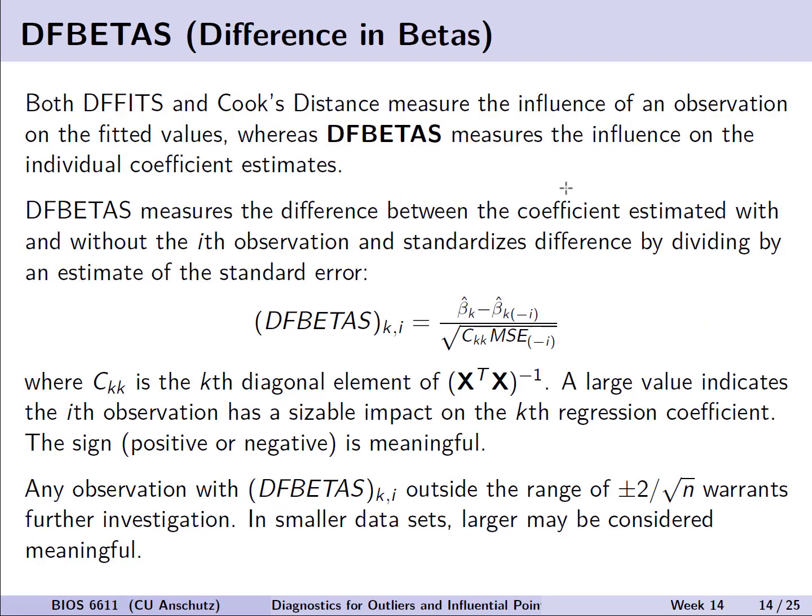The final term we'll look at to also numerically explore potential influence is DFBETAS or difference in betas. Both DFFITS and Cook's distance were measuring the influence of an observation on fitted values in some way, whereas the DFBETAS will measure the influence of that observation on the coefficient estimates themselves. The DFBETAS will measure the difference between the coefficient estimated with and without that given observation and standardize the difference by dividing by the estimate of the standard error. Any observation then that falls outside a range of plus or minus 2 divided by the square root of n warrants further investigation, where in smaller datasets we may want even larger values to be considered meaningful.